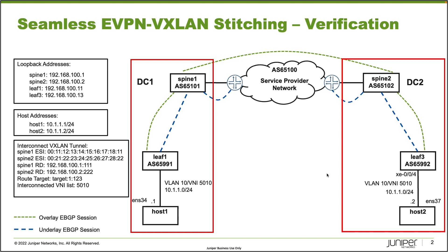The setup is working and functioning — Host1 can communicate with Host2. We want to dive into the individual QFX devices and make sure things are working correctly. Some other things to point out are the loopback addresses: Spine1 uses 192.168.100.1, Spine2 uses .2, Leaf1 uses .11, and Leaf3 uses .13.